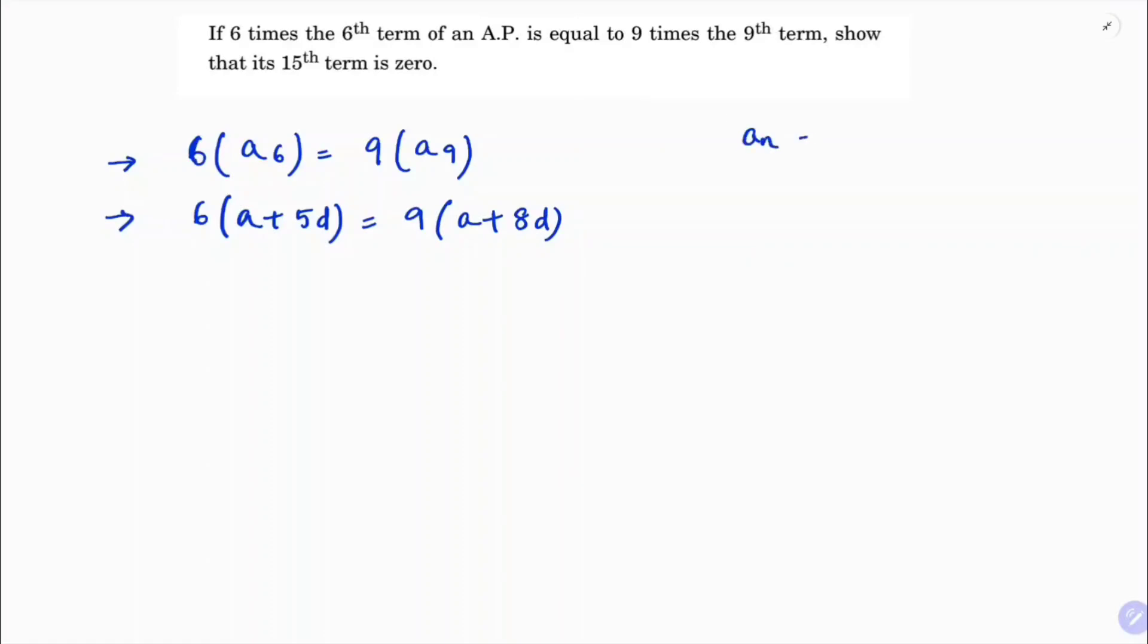Here the nth term formula is An equals A plus (n minus 1) times D. So now if I will find A6, that is A plus 6 minus 1 into D, so A plus 5D. In the same way, 9th term A9 is A plus 9 minus 1 into D, which is A plus 8D.